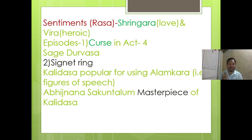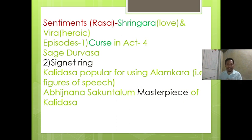Abhijnanashakuntalam is the masterpiece of Kalidasa. Figures of speech include metaphor, simile, hyperbaton, hyperbole, and alliteration. In Sanskrit drama, the figures of speech are different — they are called shabdalamkara and arthalamkara, and these two types of figures of speech are found in Sanskrit plays.